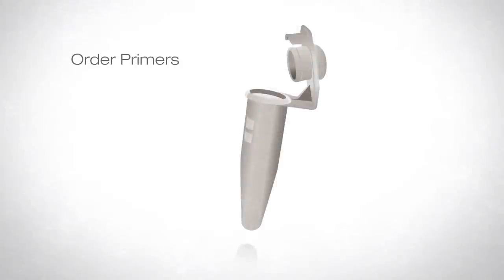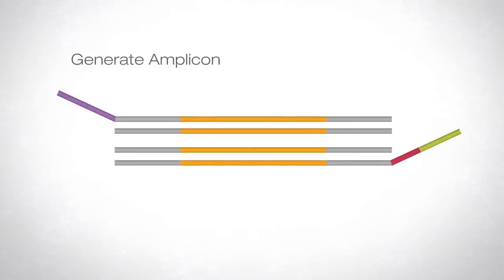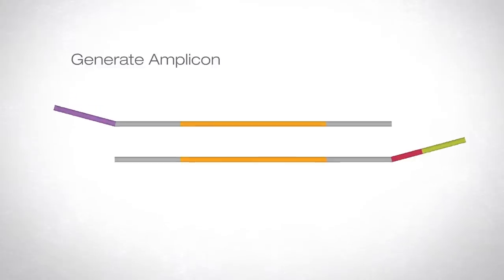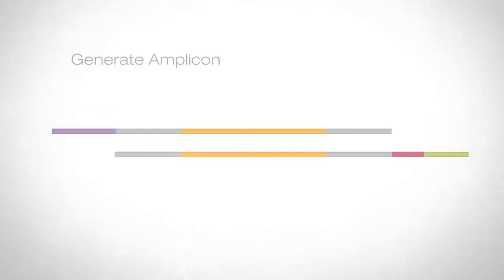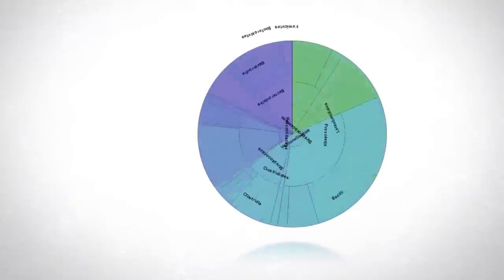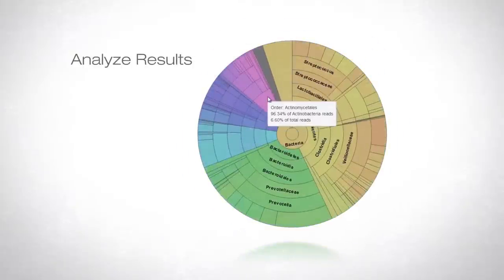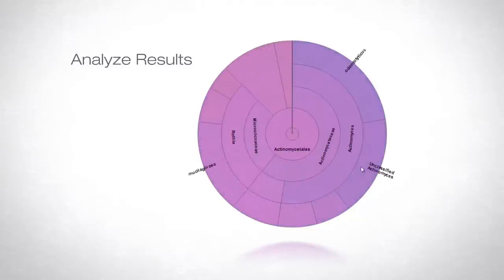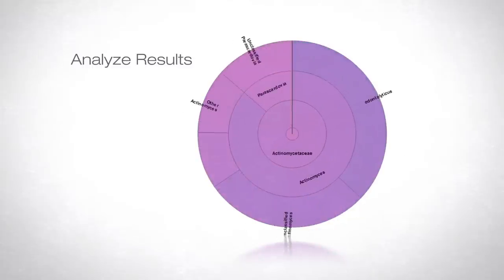Step one, order amplicon primers based on your region of interest. Step two, using standard laboratory techniques, generate amplicon libraries by PCR, then add Illumina's sequencing and index adapters. Step three, sequence on MySeq. Step four, analyze the results using the 16S metagenomics on the onboard MySeq reporter software or on BaseSpace.